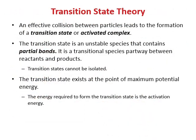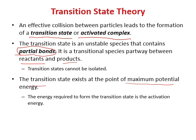Transition state theory is another theory to explain kinetics. Before reactants form product, they first go through a transition state, also called an activated complex. The transition state is an unstable species containing partial bonds — it is a transitional species partway between reactants and product, existing at the point of maximum potential energy.